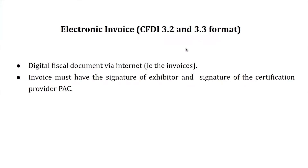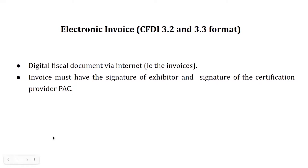In Mexico, from 2011, electronic invoices are in CFDI format — a digital physical document through the internet. For a CFDI invoice, it must have the signature of the exhibitor and the signature of the certification provider PAC. CFDI 3.2 format was used until December 31, 2017. After that, CFDI 3.3 format must be used from January 1, 2018. This format is supported by Odoo version 11 and above.